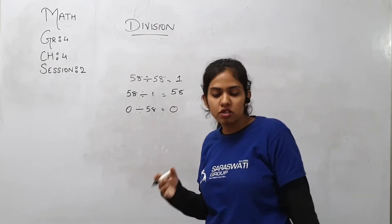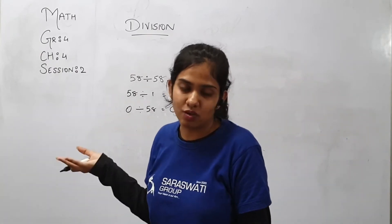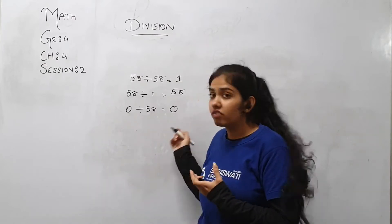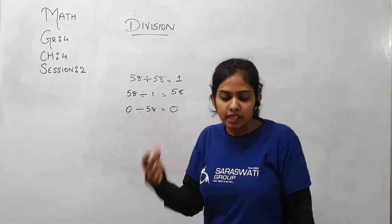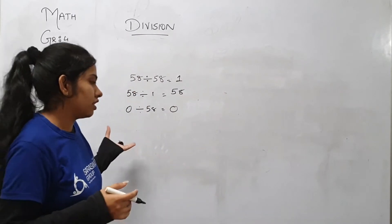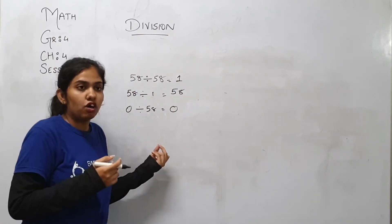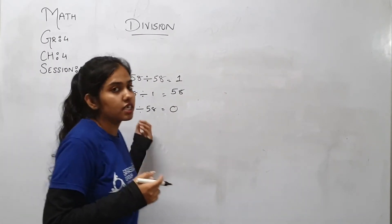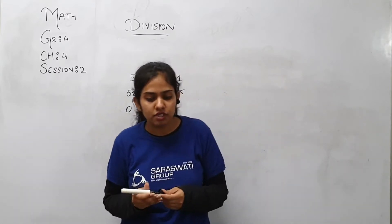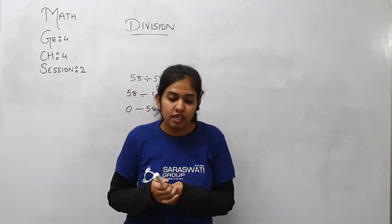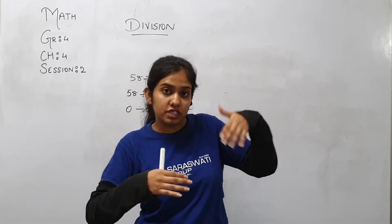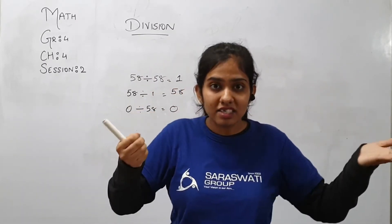And it is not possible to divide any number by 0. Then afterwards, the remainder is always less than the divisor. Then we are going to solve the sum of match the following. Then we have also recapped what we have studied in our previous class.